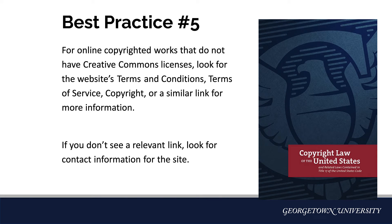Often, you will find relevant material on a website without the Creative Commons or public domain designation. Most works, even when they are publicly available online, are copyrighted. To determine what uses are allowed for online works that do not have a Creative Commons license, look for the website's terms and conditions, terms of service, copyright, or similar link for more information. These links usually appear at the bottom of the webpage. If you don't see a relevant link, look for contact information for the site and send a query asking whether the material can be used in your project.